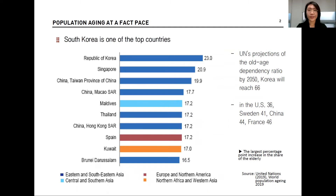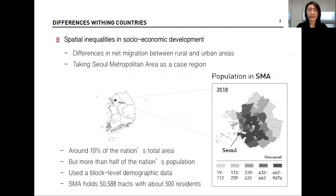As population aging takes place at a fast pace in Asia, South Korea is one of the top countries where the proportion of the elderly population is significantly high relative to the working age population. According to the UN's projections, the old age dependency ratio in South Korea is expected to reach 66 by 2050, while in the United States it will reach 36, in Sweden 41, China 44, and France 46. However, these differences occur not only among countries, but also within countries, as population aging tracks with spatial inequalities in socioeconomic development. Differences in net migration between rural and urban areas further exacerbate the spatial disparities in population aging.